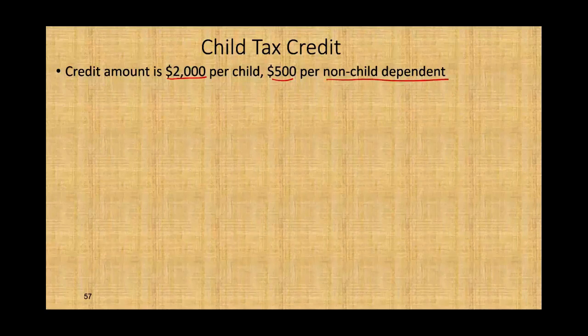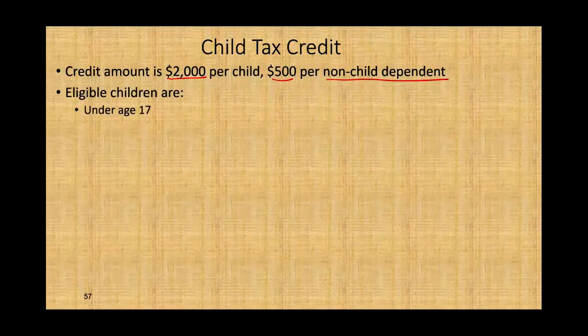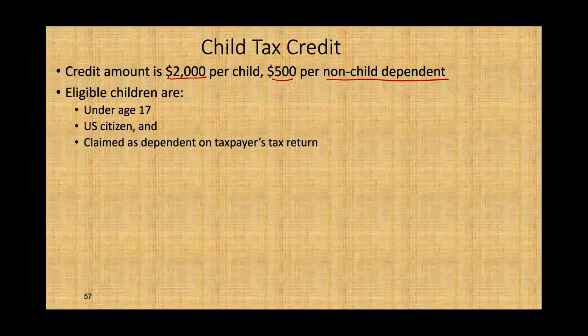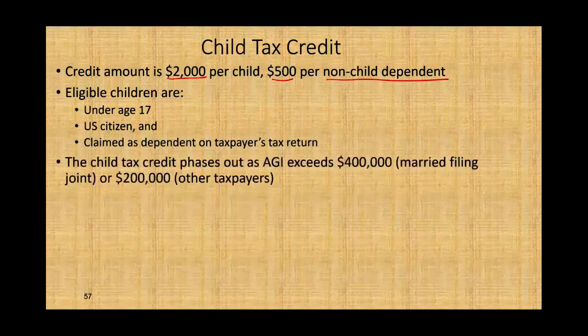What is considered a child? They have to be under the age of 17, a U.S. citizen, and claimed as your dependent. Bear in mind, the child tax credit phases out at AGI that exceeds $400,000 for married filing jointly or $200,000 for other taxpayers. This is a very family-friendly child tax credit.